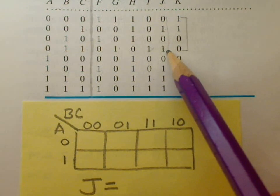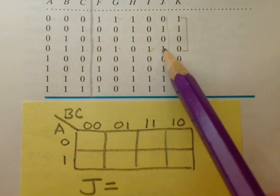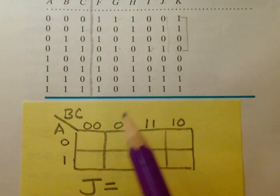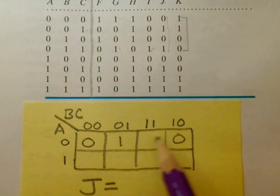Now, looking at this output J, we see that it's zero, one, zero, one, and the way that you put those four into the Karnaugh map is like this: zero, one, zero, one.